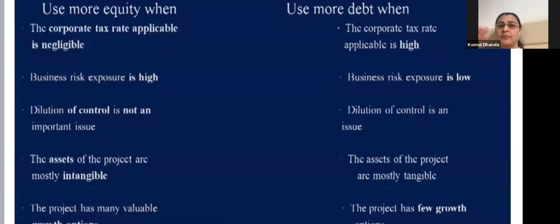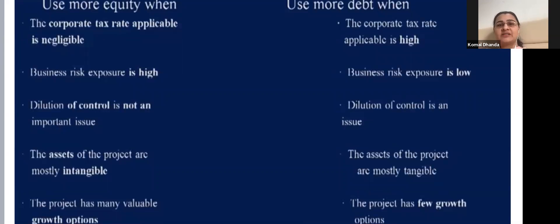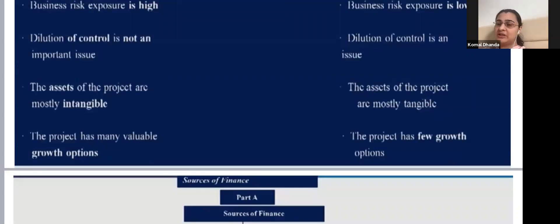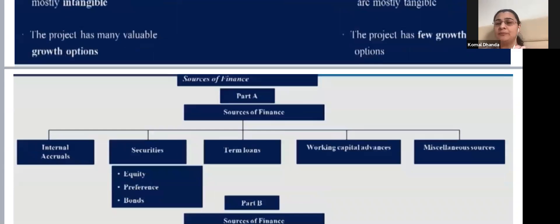In summary: if corporate tax rate is negligible, go for equity; if high, go for debt. If business risk exposure is high, choose equity; if low, choose debt. If dilution of control is not a concern, use more equity; if it is an issue, use more debt. If assets are mostly intangible, use equity; if there are more growth options, choose equity; if limited growth options, choose debt.